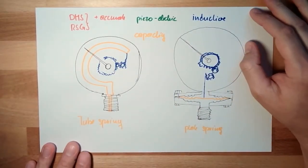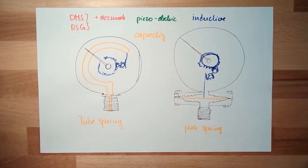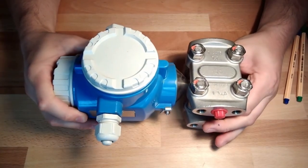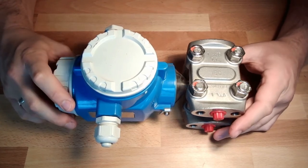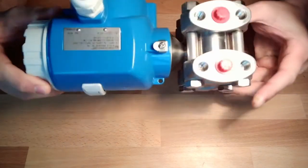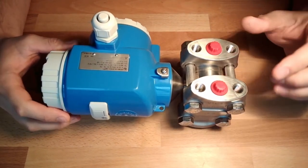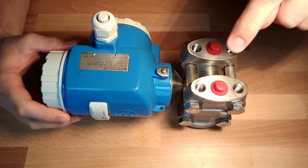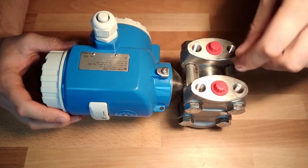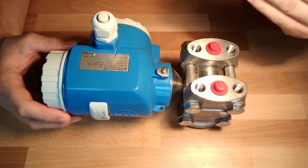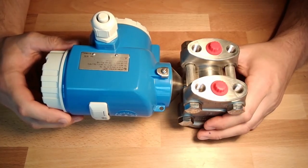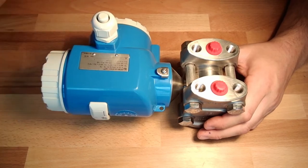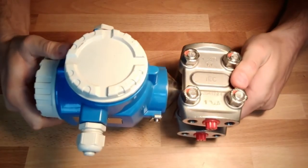Let's have a look at a real pressure measurement device. This one here is already a little bit special, because it's a differential pressure measurement device. You can see we have two connectors. This device is measuring the pressure difference between connector one and connector two. This can be used, for instance, for flow measurement with an orifice. This is how it typically looks like.